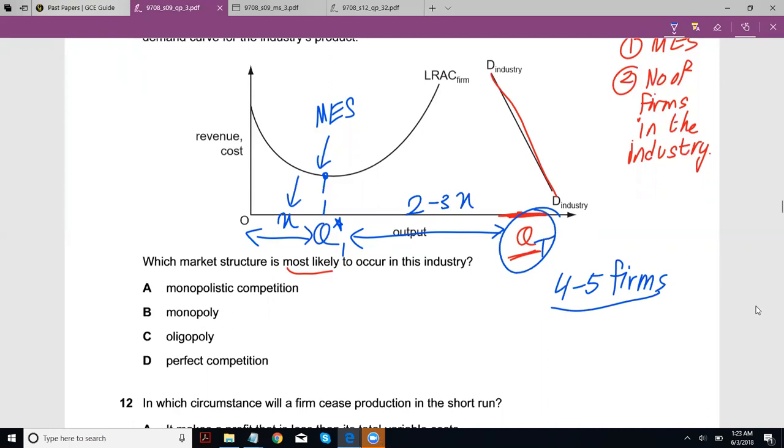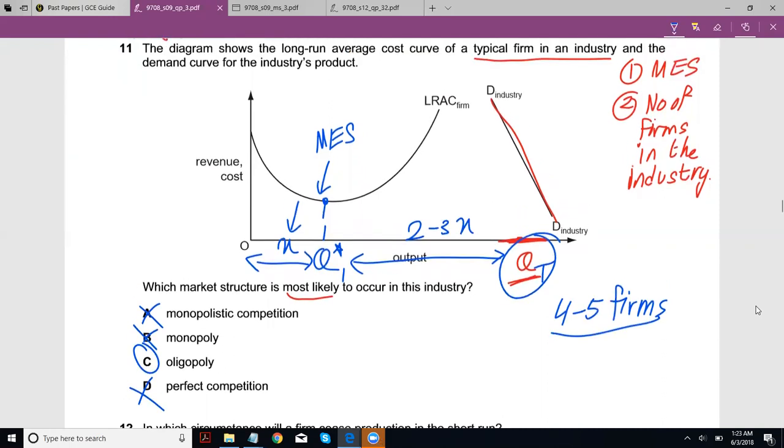Now you just look at which market structure has four to five firms. It's not monopolistic, that has a lot of firms. It's not a monopoly, that's just one firm. Oligopoly makes sense. Perfect competition just has too many firms. So that was the idea and the way you could solve this particular question.